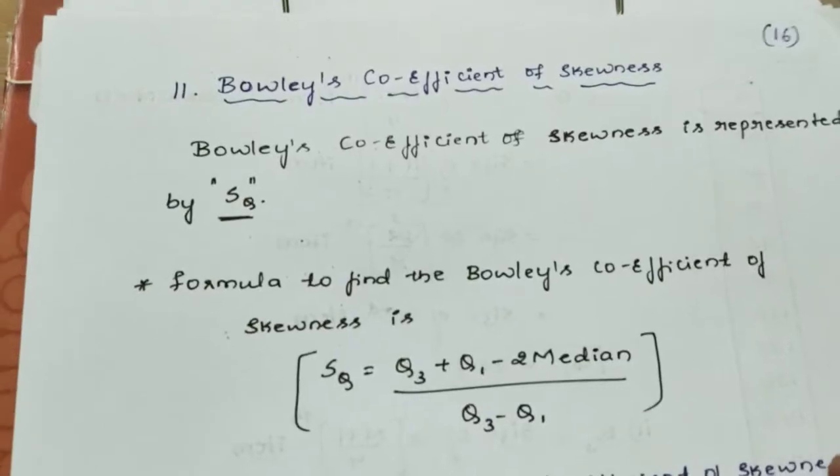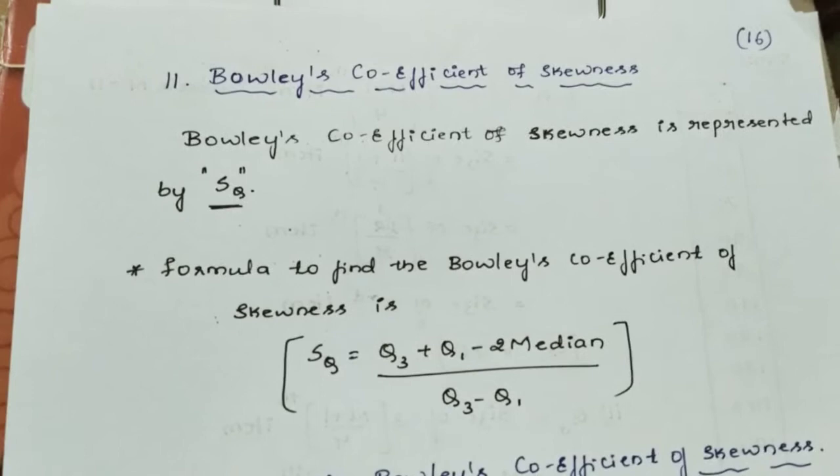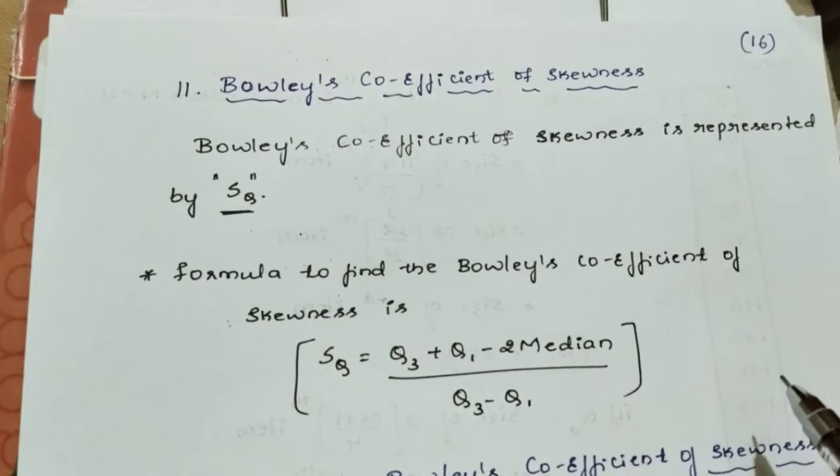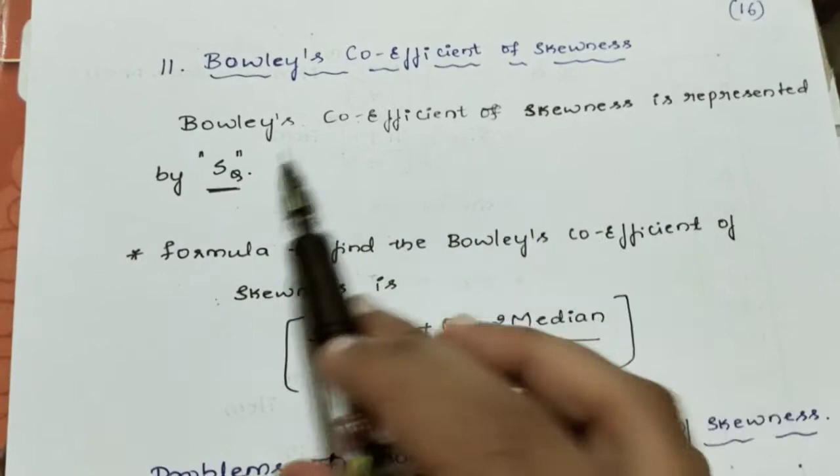Hello my dear students, welcome back. Today we are discussing one of the measures of skewness, that is the Bowley's coefficient of skewness. The Bowley's coefficient of skewness is represented using the SQ symbol.